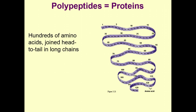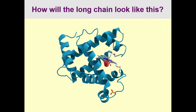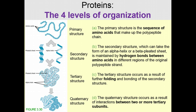A polypeptide is another word for a protein — hundreds of amino acids joined head to tail in long chains by peptide bonds. To go from a linear chain to a fully formed protein, there are four levels of organization: primary, secondary, tertiary, and quaternary structure.